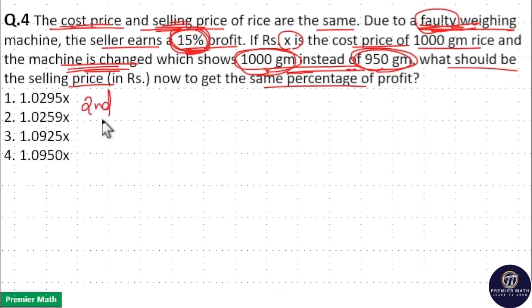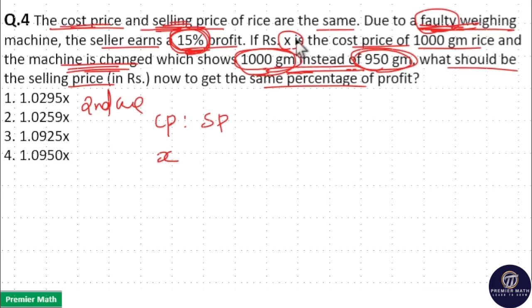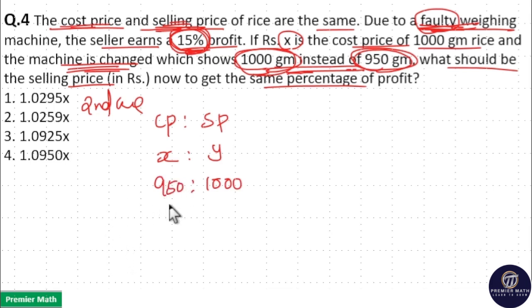Take the second case: selling price and cost price ratio. CP and SP ratio in the second case — X is the cost price. Consider Y as the selling price in the second case in order to balance 15% profit. Now, when the customer asks for 1000 gram, the shopkeeper gives 950 gram. That is, the machine shows 1000 gram when you weigh 950 gram, so the customer pays for 1000 gram but the shopkeeper only costs 950 gram.